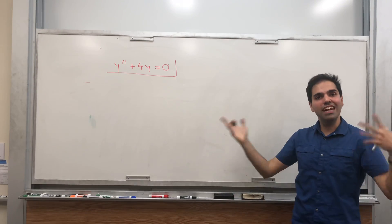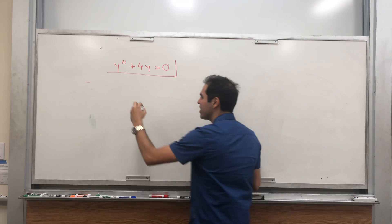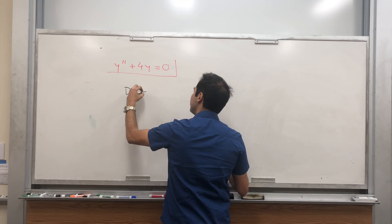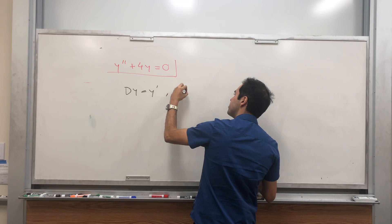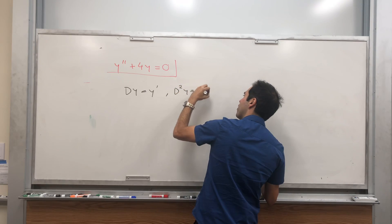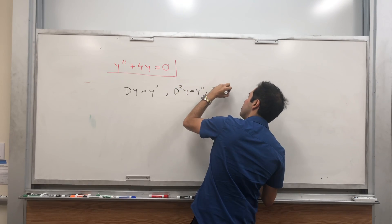And again, it's based on the idea of a differential operator, which I want to remind you: Dy is just another name for y prime, D squared y is y double prime, and Iy is just y.